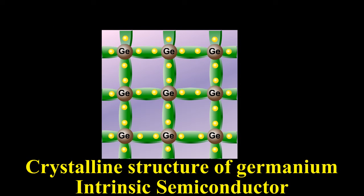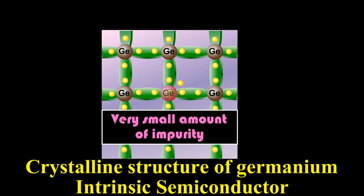The efficient and convenient method of generating free electrons and holes is to add very small amount of selected impurity inside the crystal.